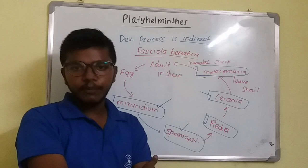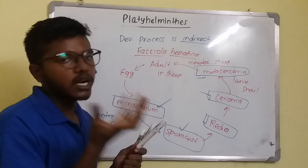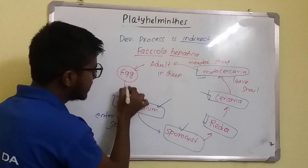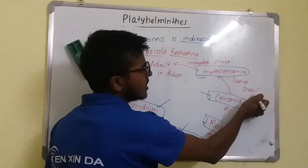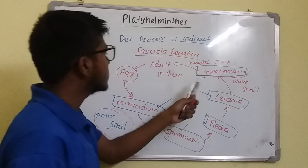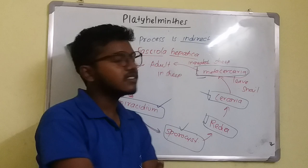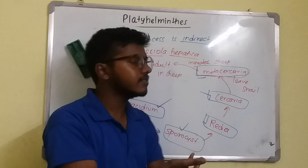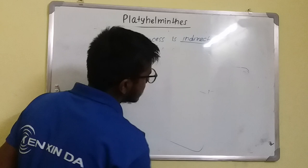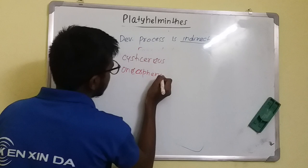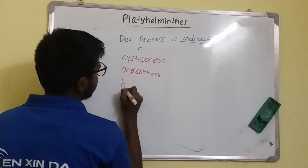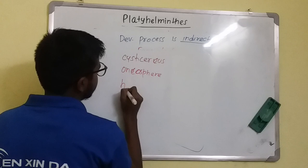Fasciola hepatica will be covered in detail in upcoming videos. In Taenia (tapeworm), the larval stages are the oncosphere and the cysticercus. This video covers the general characters of Platyhelminthes.